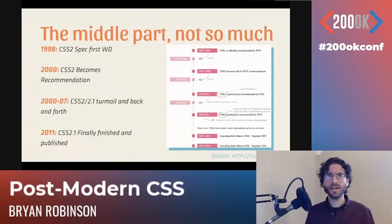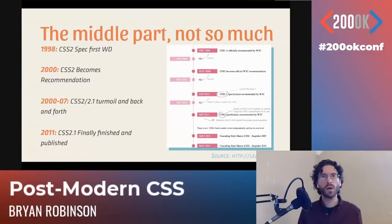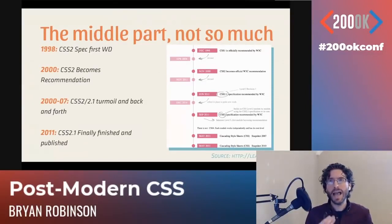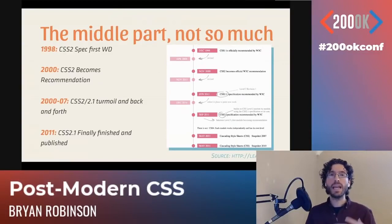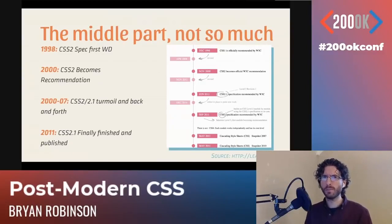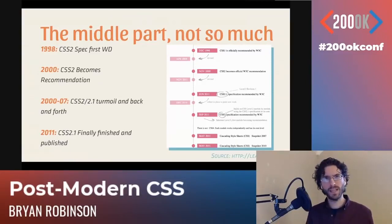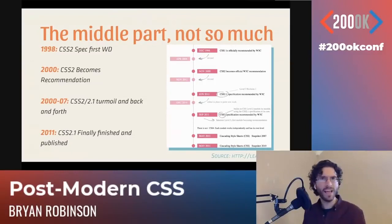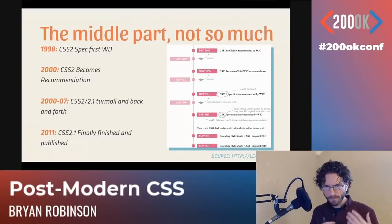The middle part, not so much. In 1998 they had all these new ideas and started working on the CSS2 level 2 specification. It entered its first working draft in 1998, and then in 2000, just two years later, just like CSS1, it became a recommendation. But then between 2000 and 2007, it literally went back and forth between recommendation and working draft like five times. That's not great if you want browsers to support the actual specification. That's why we have so many bugs in older browsers around these implementations — why floats don't work exactly the same way, why widths and paddings in the box model are different between IE6, IE7, and Firefox.